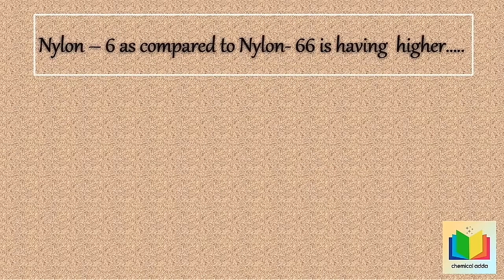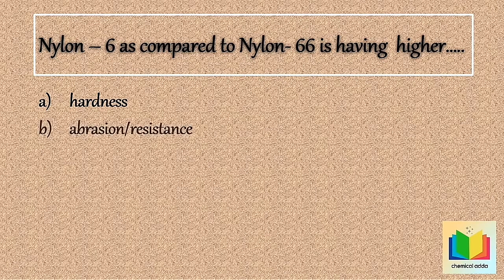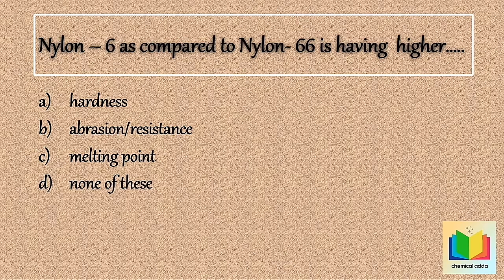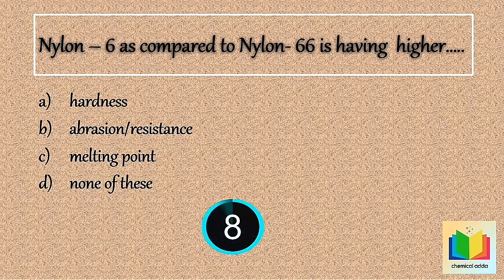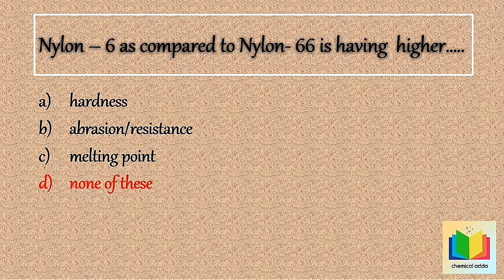Next question: Nylon 6 as compared to Nylon 66 is having higher — . Option A: Hardness. Option B: Abrasion resistance. Option C: Melting point. Option D: None of these. [10 seconds] So the answer is Option D: None of these.